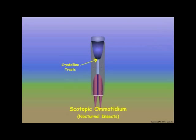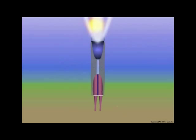In scotopic ommatidia, incoming light is focused on the base of the crystalline cone and conducted to the rhabdom by the crystalline tracts. Unlike photopic ommatidia, scotopic ommatidia are sensitive to the changes in light intensity that occur during the day and night cycles, and they detect light differently during the light and dark phases of the daily circadian cycle.